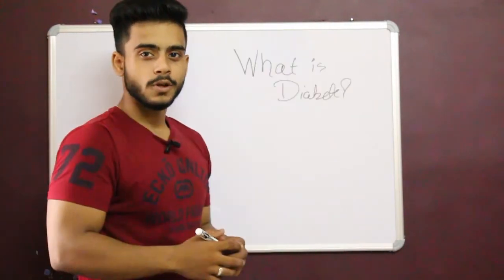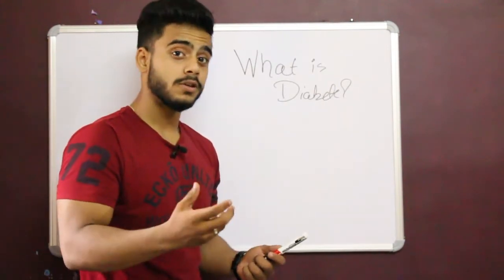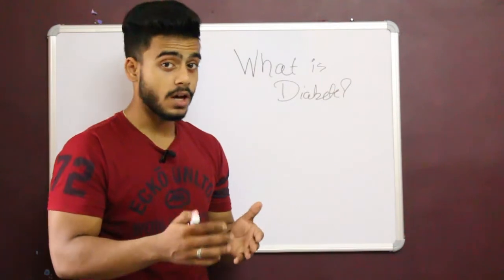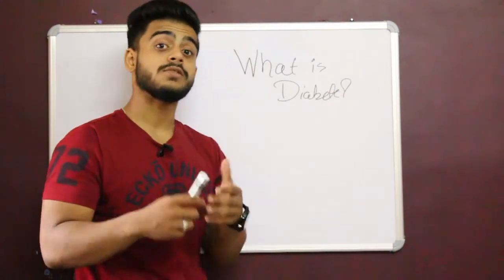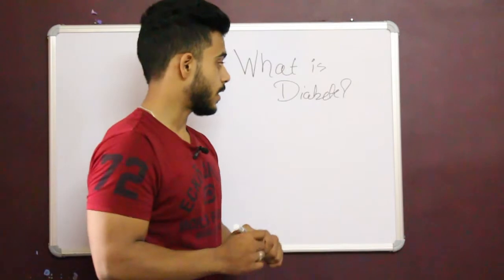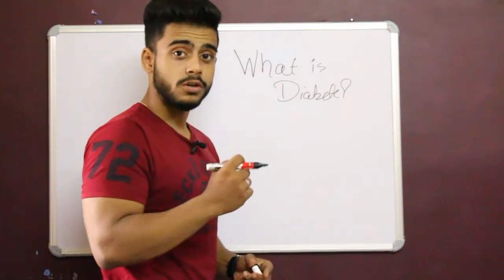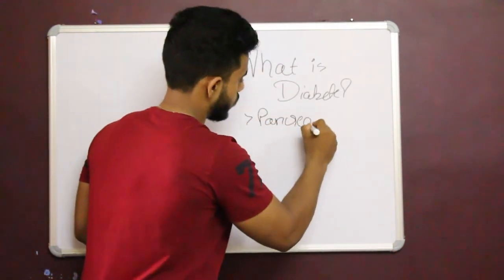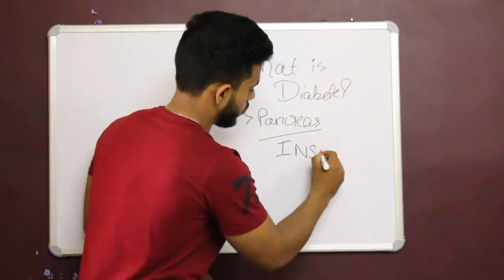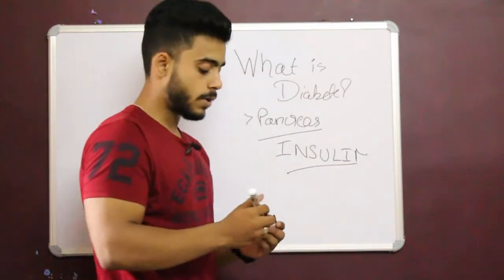Let's get started with the video. The first question is what actually happens in diabetes? People don't know that diabetes is what happens. You have a blood test, you see certain range of reports and you are diabetic. But do you know what actually causes diabetes? Diabetes actually starts from a body part called pancreas which produces a hormone called insulin.